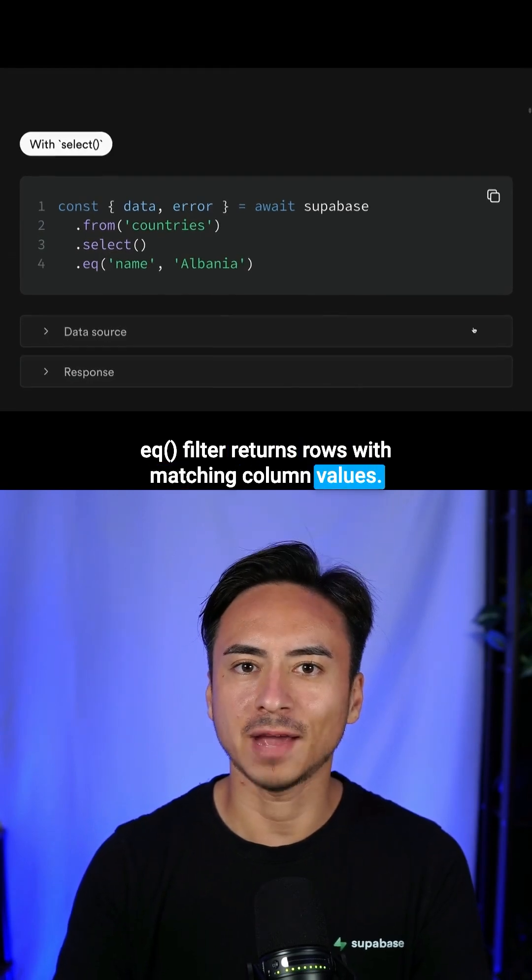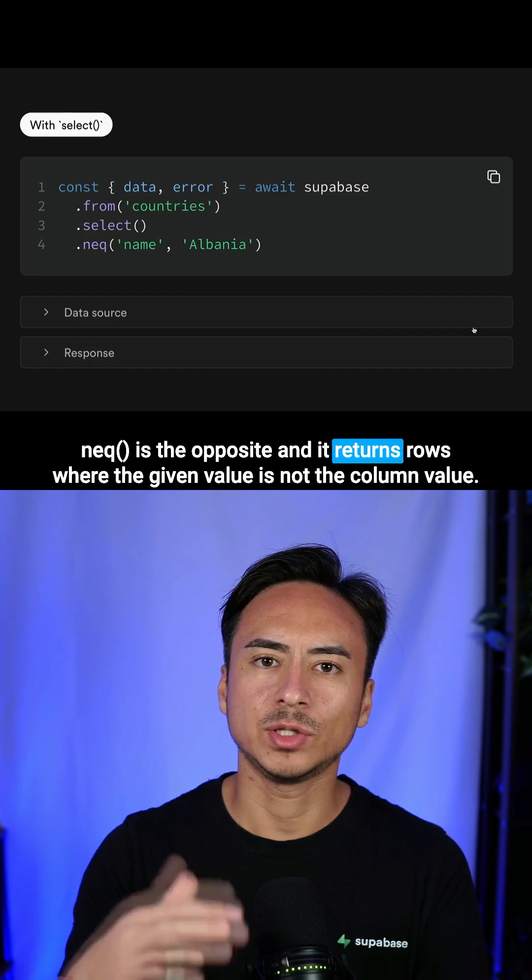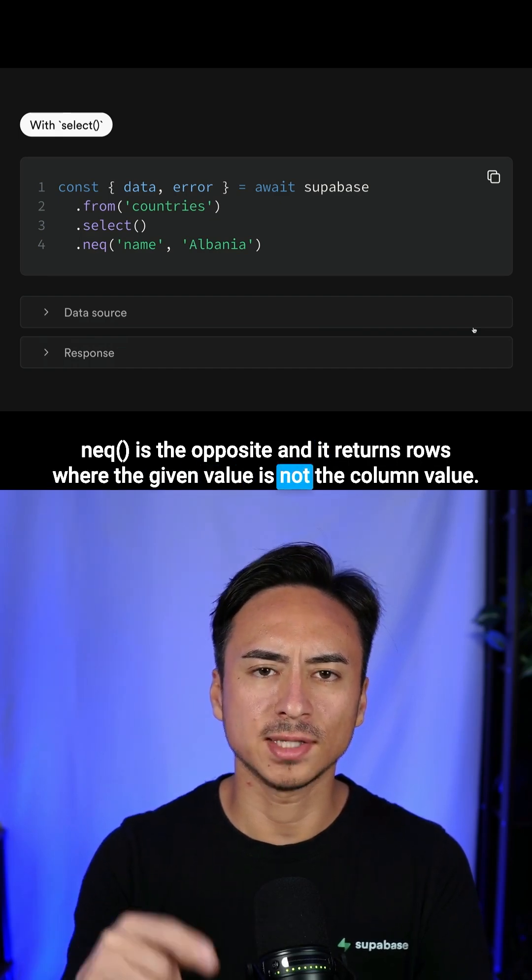EQ filter returns rows with matching column values. NAQ is the opposite, and it returns rows where the given value is not the column value.